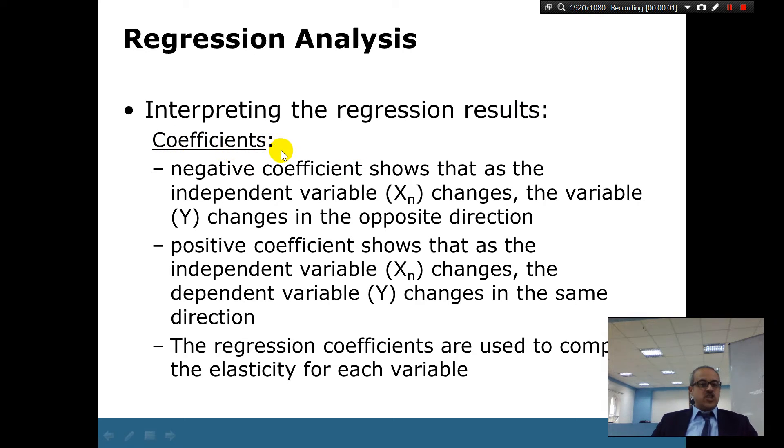In referring to the regression results, we've got the coefficient. A negative coefficient shows that as the independent variable X changes, the variable Y will change in the opposite direction.